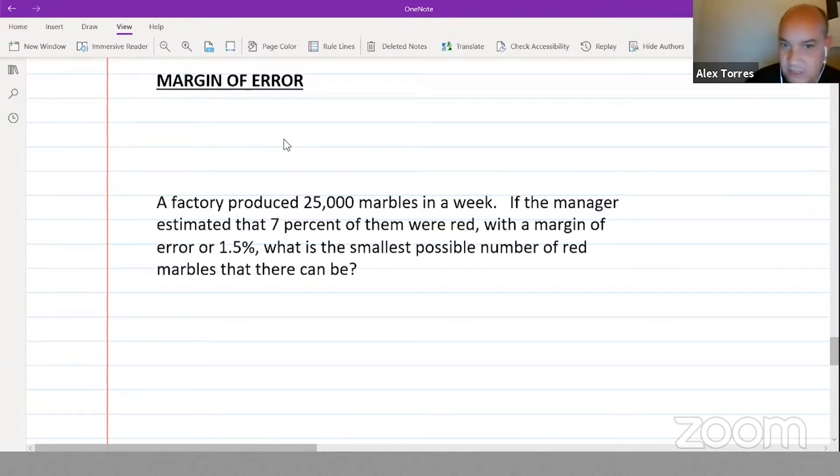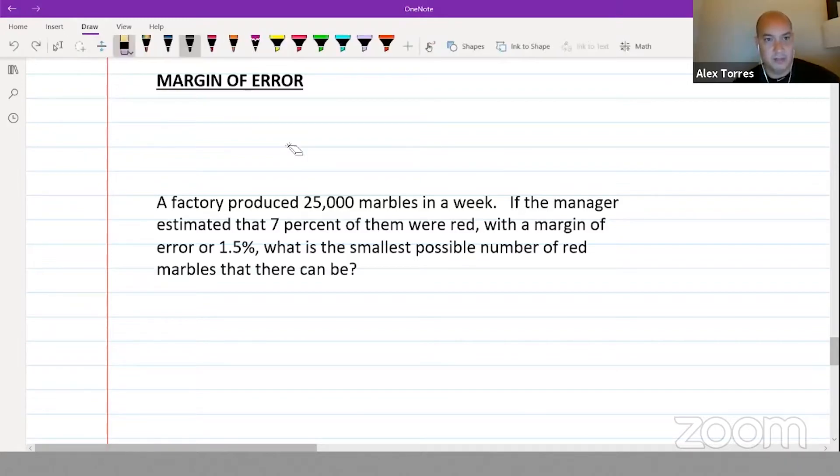When you do this video or any similar video, you can always pause when you see the question, try it on your own, and then compare your answer. So we have 25,000 marbles and the estimate is that 7% of them are red. What's 7% of 25,000? It's 1,750.